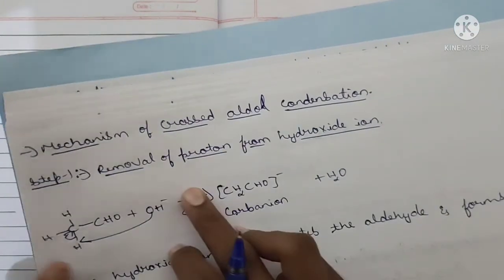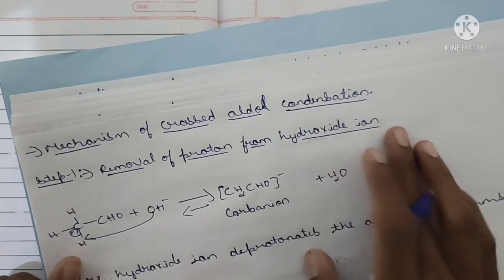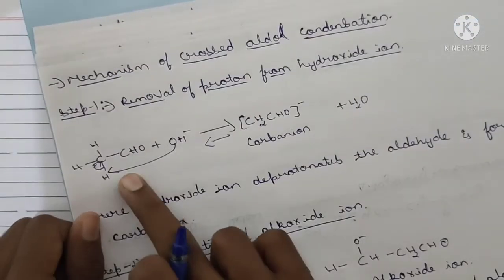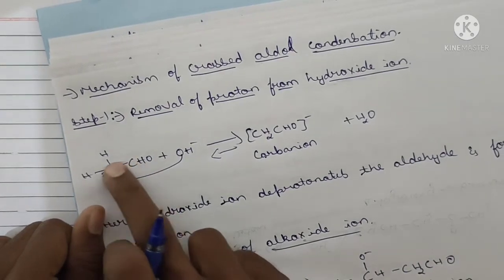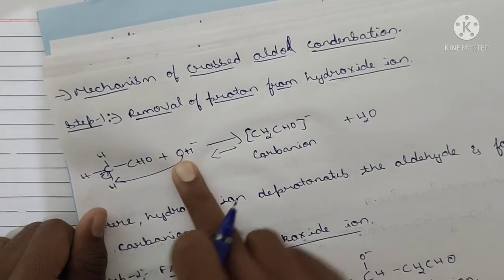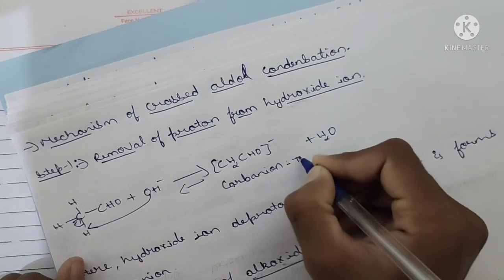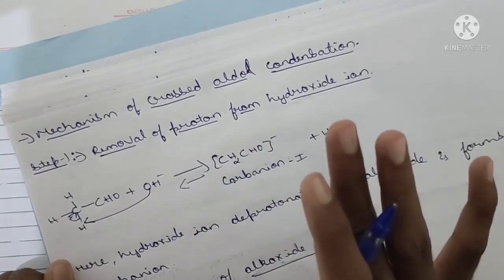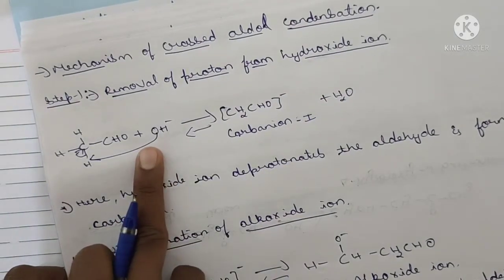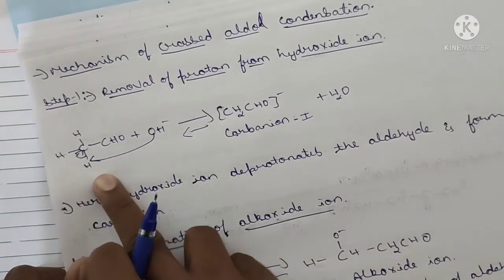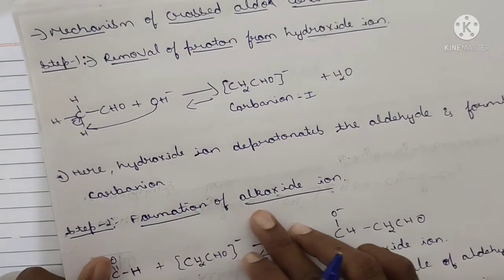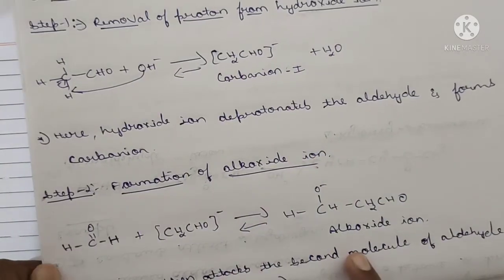The mechanism of cross aldol condensation has five steps. Step one: removal of a proton by the hydroxide ion. The hydroxide ion (OH⁻) acts as the base. With acetaldehyde, the OH⁻ removes a proton H⁺ from the aldehyde — this is deprotonation — and forms the first carbanion (CH2CHO⁻) with water being liberated. The hydroxide ion deprotonates the aldehyde to form carbanion one.